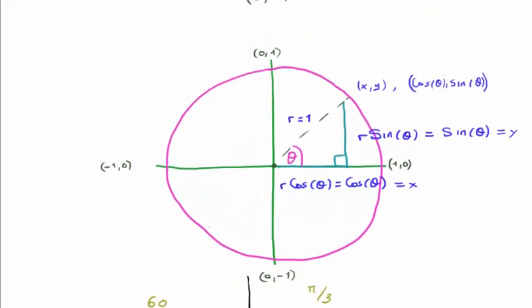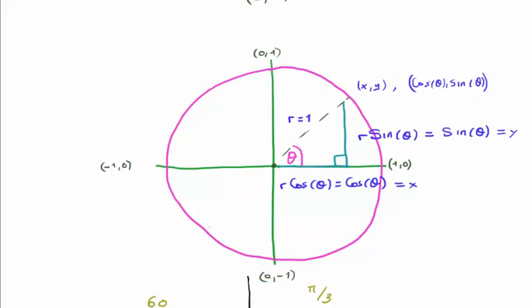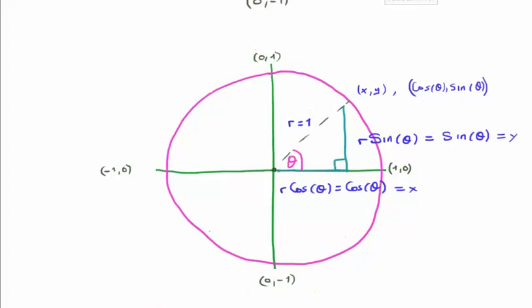Plugging everything into the unit circle: the radius is 1, and a point is still described by x and y. The x-coordinate is the adjacent side, r cosine theta, but since the radius equals 1, x is simply cosine theta. Similarly, y is r sine theta, and since the radius is 1, y is simply sine theta. This means any point in the unit circle is described by (cos theta, sin theta).